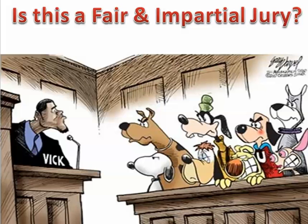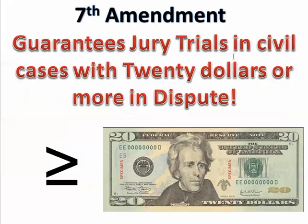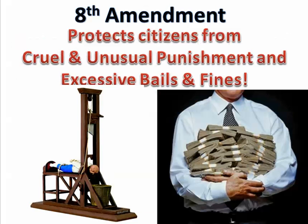The Seventh Amendment is the right to a jury trial in civil cases — not criminal cases where you've been accused of crimes, but civil cases involving $20 or more (that was the threshold back then; it's a bit more now). The Eighth Amendment protects us against cruel and unusual punishment by the government — the government can't torture us — and also protects against excessive bails and fines.